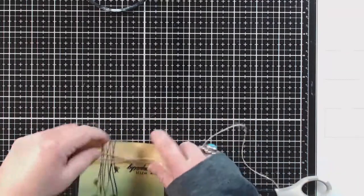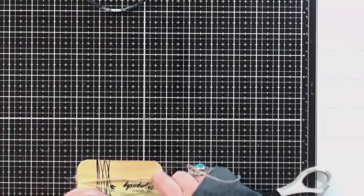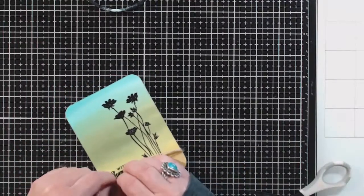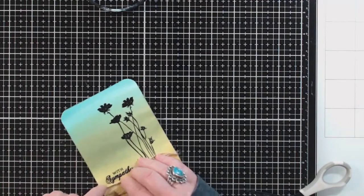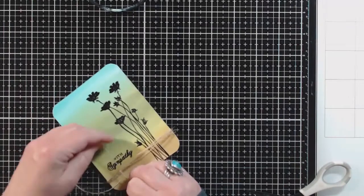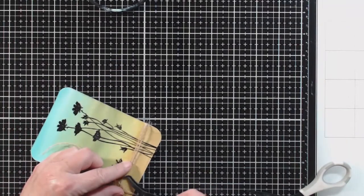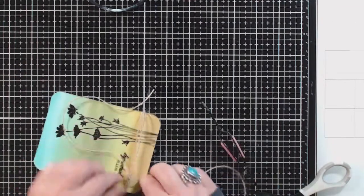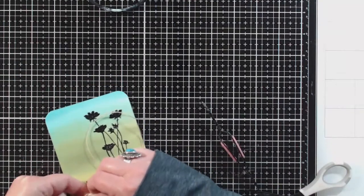Something that helps me here are reverse tweezers and a lot of crafters have reverse tweezers but if you don't these are the opposite in the sense that when you squeeze them is when they open and when you're not squeezing them is when they're pinching at the end. So you can actually as you see here I'm putting it on and then letting go and it's holding its pinch. Really great tool.